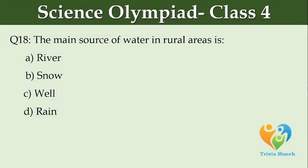The main source of water in rural areas is: Option A: river, Option B: snow, Option C: well, Option D: rain.